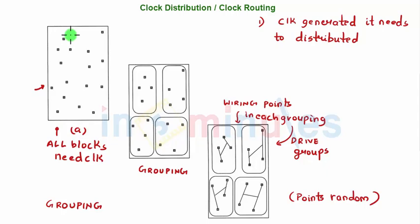So what we will do is try to reduce our problem by not driving individual receiver points but try to group the receiver points and then think about the solution of driving the group in such a way that all the groups receive the clock at the same time. So suppose all of these are my receiving points of the clock. What I have done here is I have tried to group all of them into a group of four as an example, and now I have four groups which I need to drive.